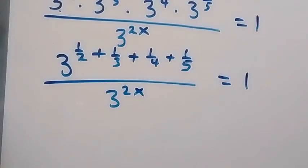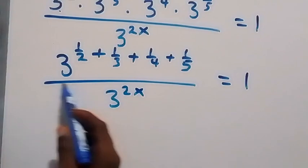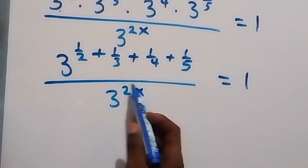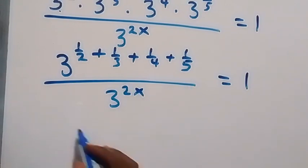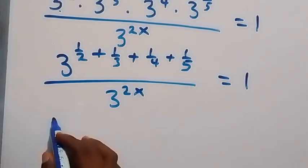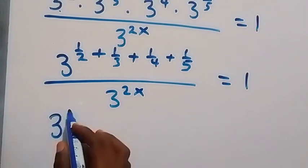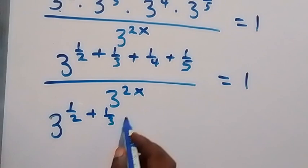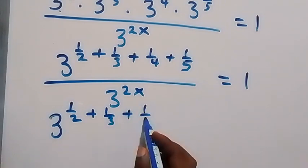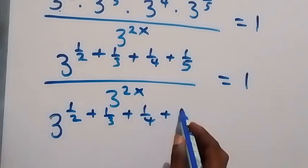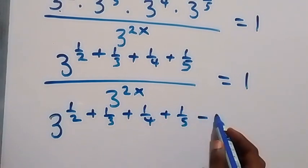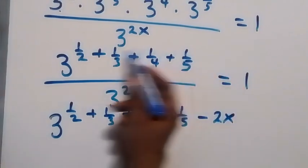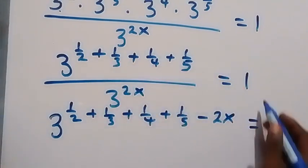In the next step, when we have numbers of the same base dividing each other, we subtract their powers. So we can write this as 3 raised to power (1/2 + 1/3 + 1/4 + 1/5 minus 2x), equals 1.